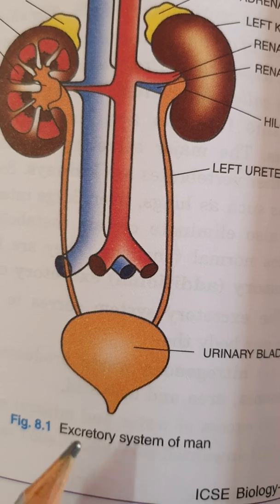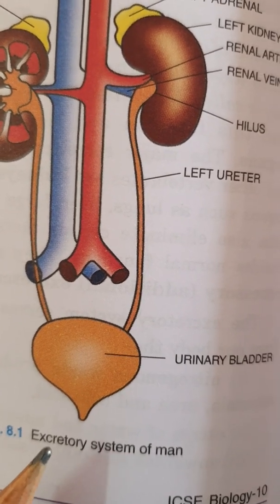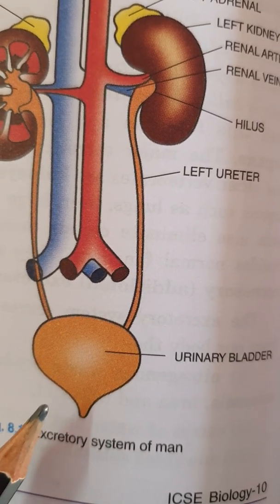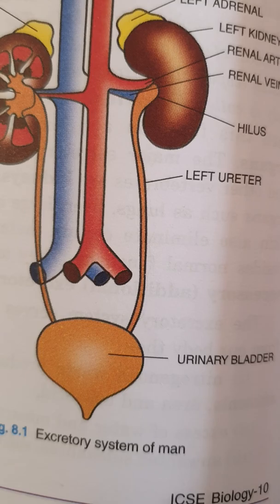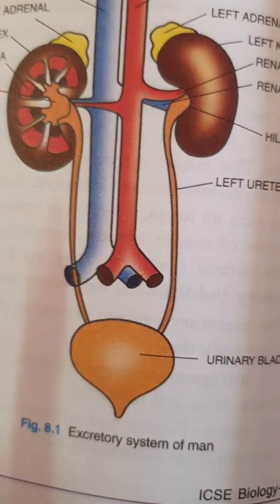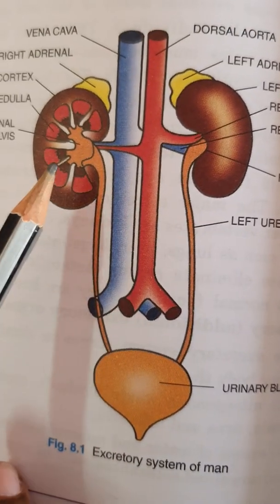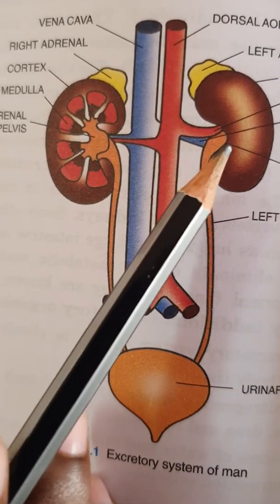From the urethra, which is the duct that carries urine from the urinary bladder, urine is expelled to the outside of the body.